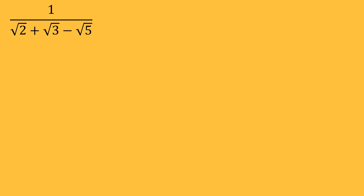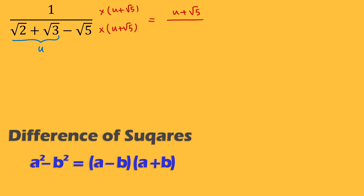How can I do that? I'm going to consider these 2 terms — root 2 plus root 3 — as something like u. So in this way, I'm going to have u minus root 5 in the bottom, and I can say I have 2 terms in the bottom. So I can go ahead and multiply both the top and the bottom of the fraction by the conjugate of the bottom. I'm going to multiply both the top and the bottom by u plus root 5. By doing that, I'm going to get u plus root 5 on the top. And by applying the difference of 2 squares identity in the bottom, I'm going to get u squared minus root 5 squared.